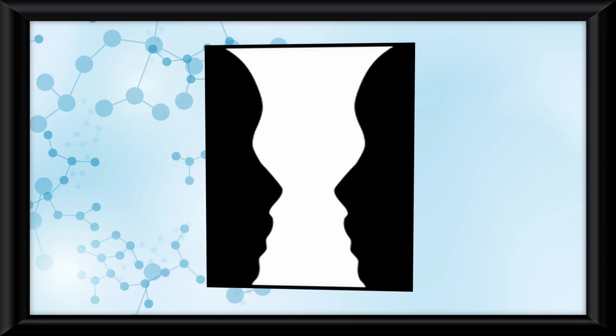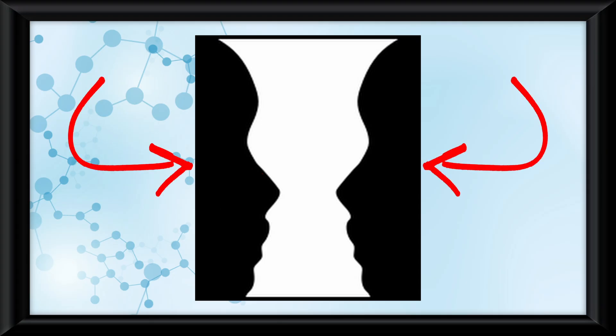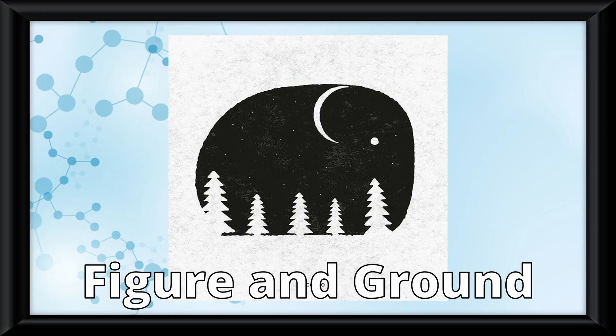In this image, if you focus on the white color you will see a vase, but if you focus on the black color you might see two faces. This is called figure and ground, because you're assigning one over the other as a figure and background.